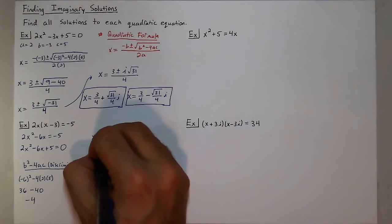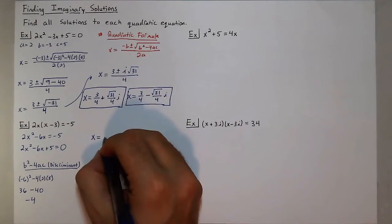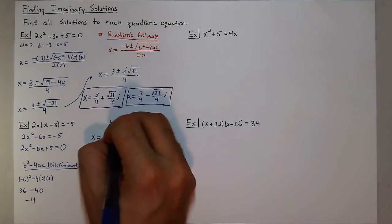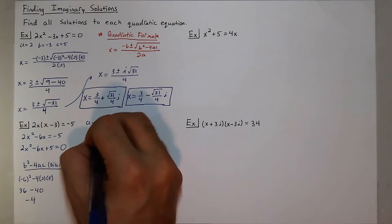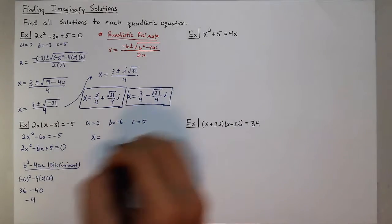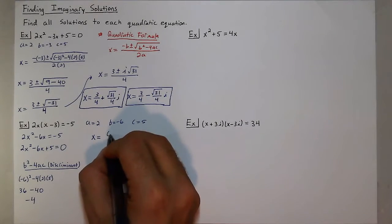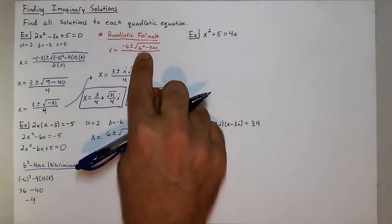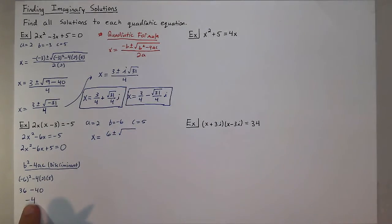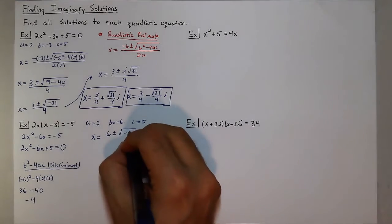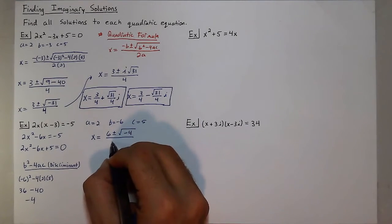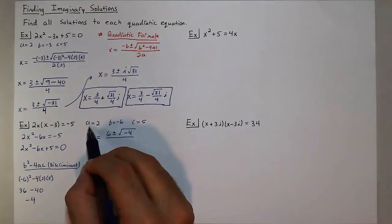So if I were to plug into my quadratic formula, x equals negative b. b in this case is negative 6, a is 2, and c is 5. Negative of negative 6 is positive 6, plus or minus the square root of b² minus 4ac, which I already found from my discriminant, all over 2 times a, which would be 2 times 2, which is 4.